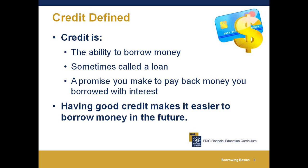Credit is the ability to borrow money. When you borrow money on credit, you get a loan. You make a promise to pay back the money you borrowed plus some extra — that extra amount is the cost of borrowing, also called interest. The type of credit we're covering today is personal or consumer credit. Any money you borrow must fit into your budget.